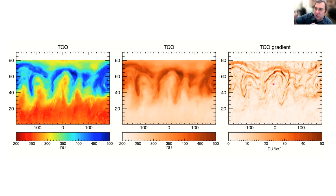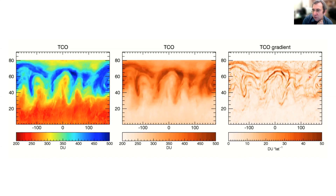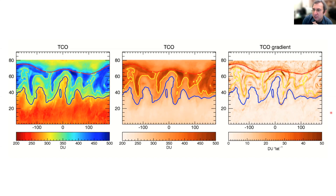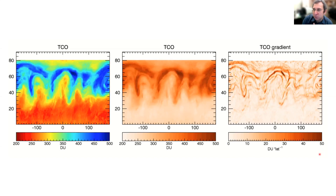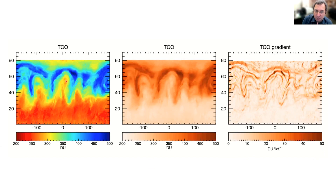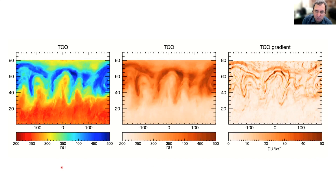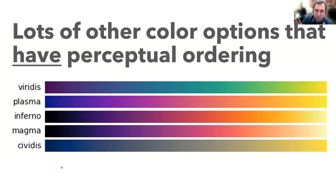If you start calculating the gradient — so where are there sharp changes? — then those features come back. So it wasn't that the features were wrong, but we may have been misled by the color map. And so it's just a good thing to avoid.